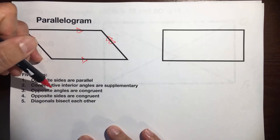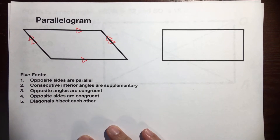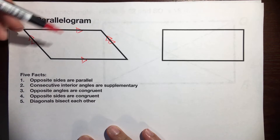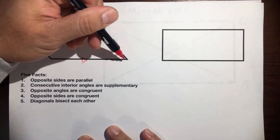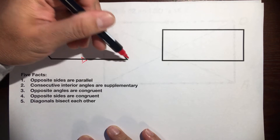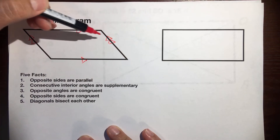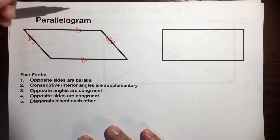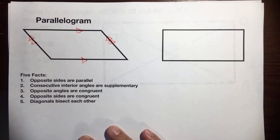Next: consecutive interior angles are supplementary. There really aren't any symbols to say that, but we just know that this angle plus this angle would add up to 180 degrees, and this angle plus this angle would add up to 180 degrees, and so on.